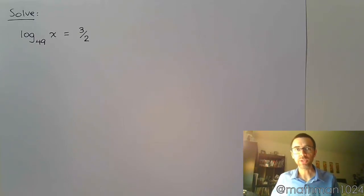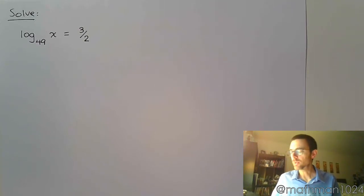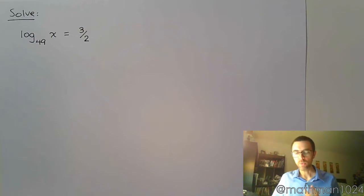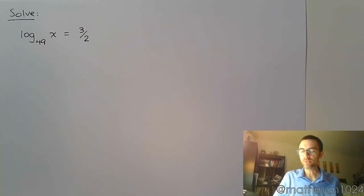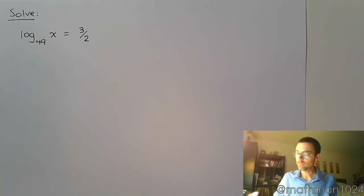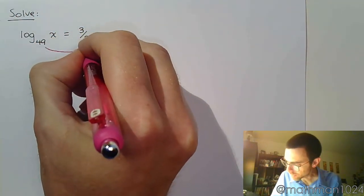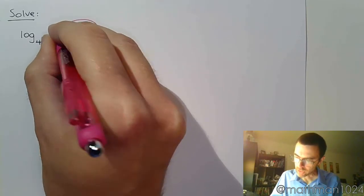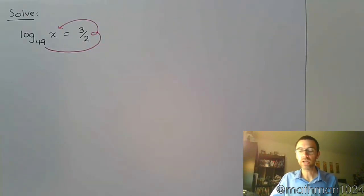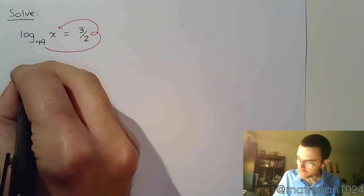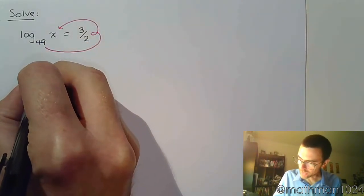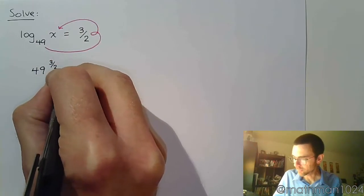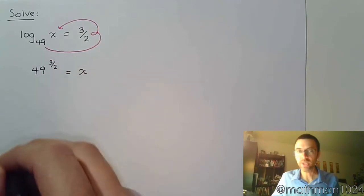We have a couple more examples to get through, starting with this one: log base 49 of x is equal to 3 halves. We remember how we're going to convert this from a logarithmic equation into something exponential. Fly the plane — this is your base — to that power is supposed to equal what's inside the logarithm. So that means we rewrite this as 49 to the 3 halves is equal to x.